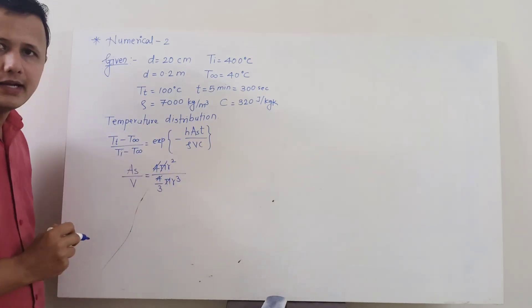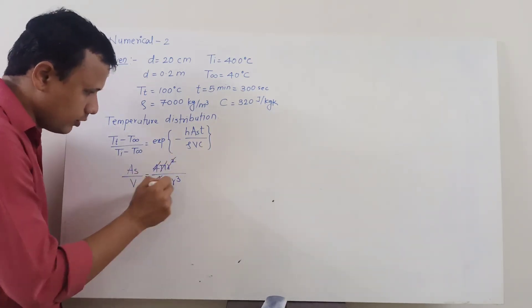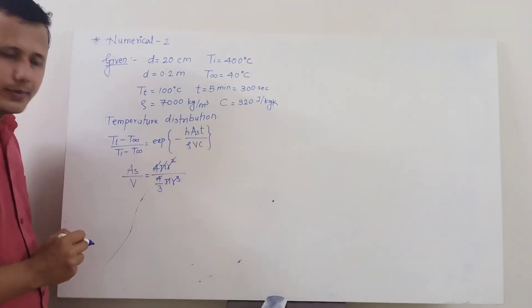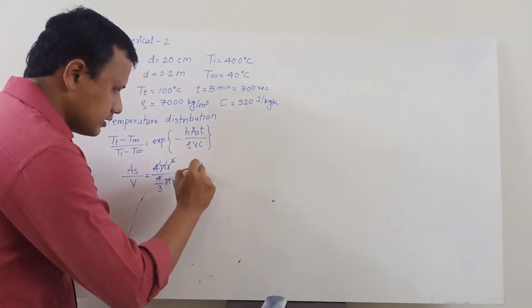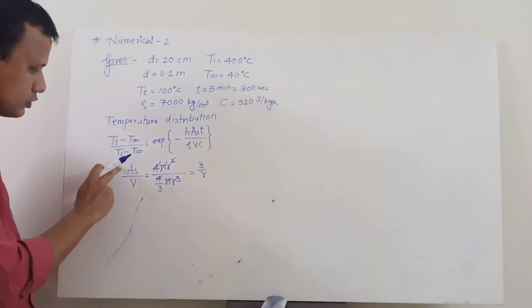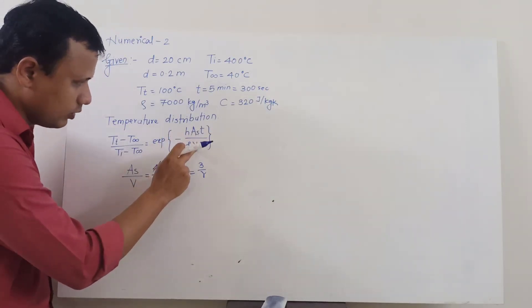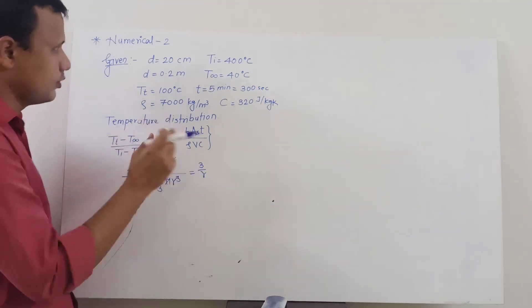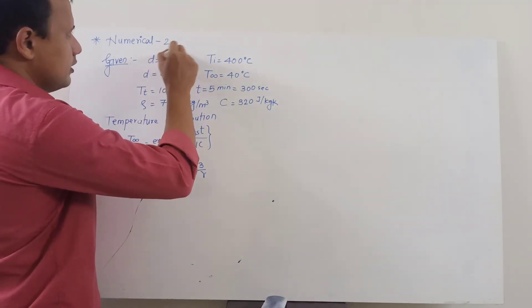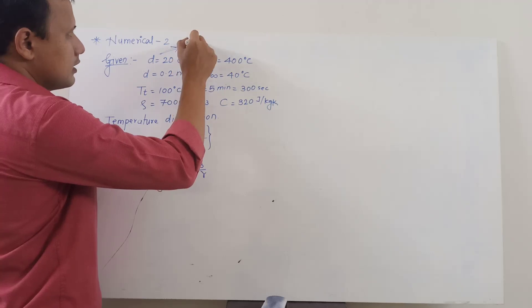R square from numerator and denominator will be absorbed so only ultimately what remains with you is 3 upon R. So A_s upon V this entire quantity is only 3 upon R where R is the radius of the sphere.